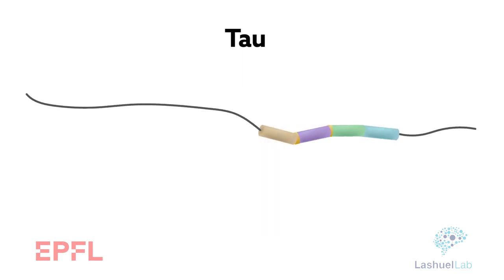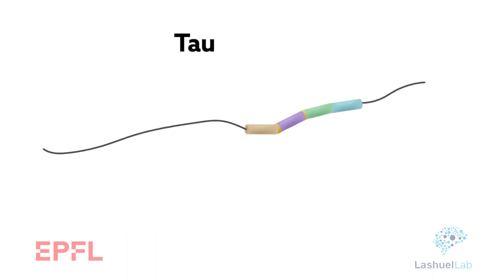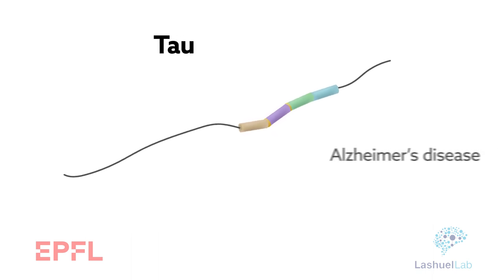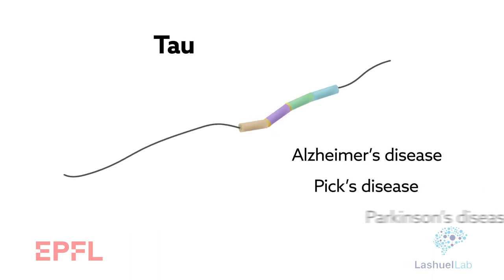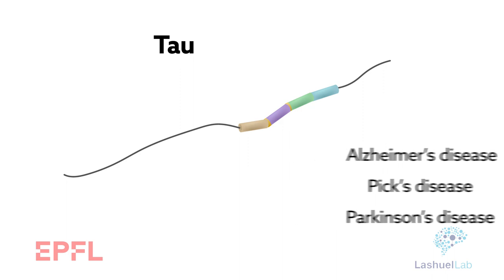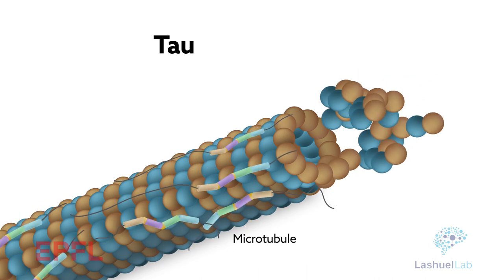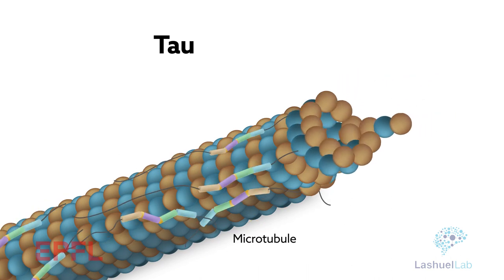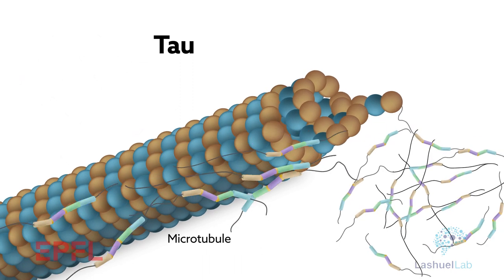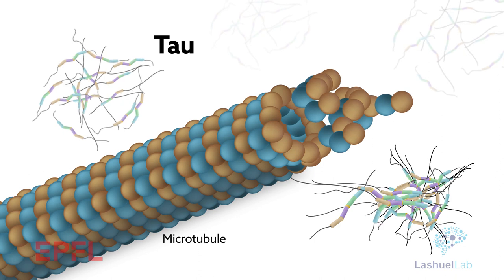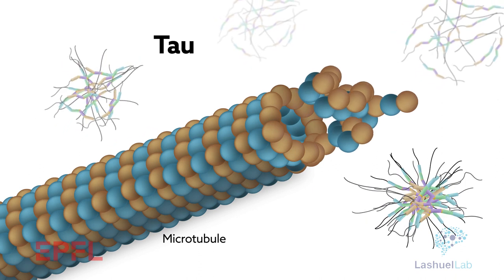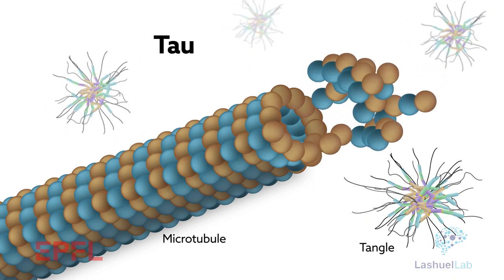The protein tau is implicated in the development of several neurodegenerative disorders including Alzheimer's, PICS, and Parkinson's disease. Normally, tau acts as a stabilizing scaffold for the microtubules that make up the cellular skeleton and help with cell division. But in the brains of people with Alzheimer's, tau proteins become detached and aggregate into the wiry tangles that have become a hallmark of the disease.